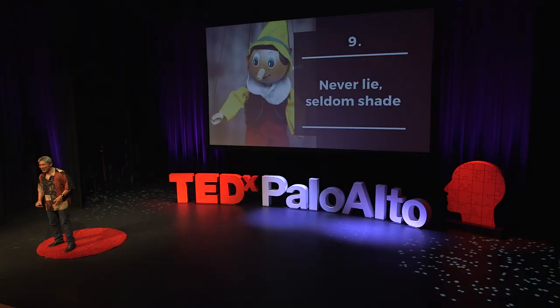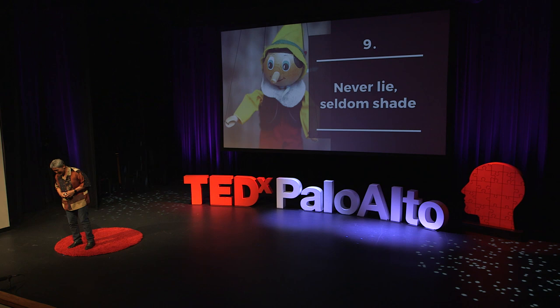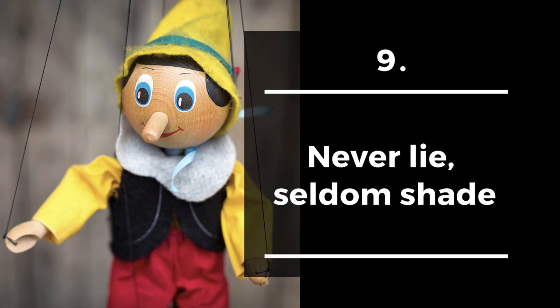Number nine is a very pragmatic approach to honesty. If you want to change the world, never lie and seldom shade the truth. At a very pragmatic level, it's because it's much easier to always tell the truth. As soon as you start lying, you have to keep track of how you lied to stay consistent. But if you tell the truth, there's usually only one truth — much easier to remember.